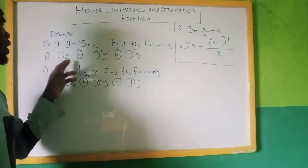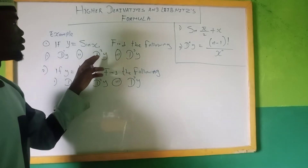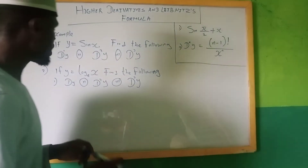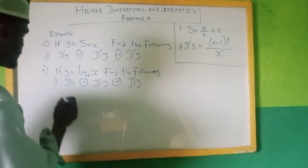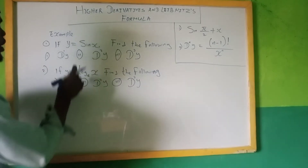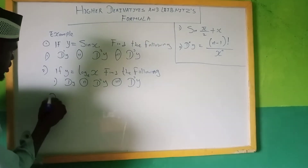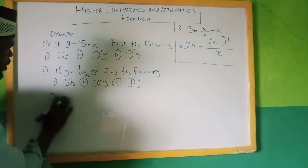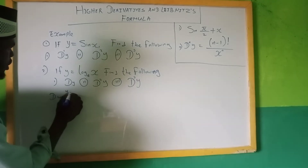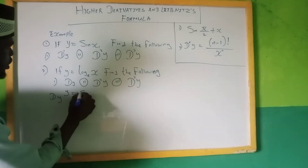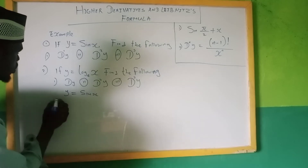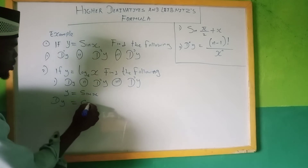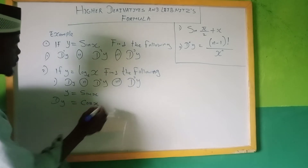The first one is dy, while the second one is d²y, and the third one is d³y. For example one, we need to find the derivative dy. So our dy is equal to — normally, our y is equal to sin x, so our dy is now equal to the derivative of sin x, which is cos x.